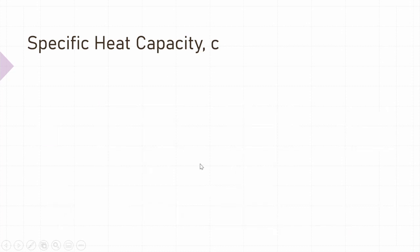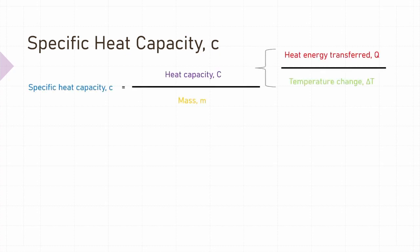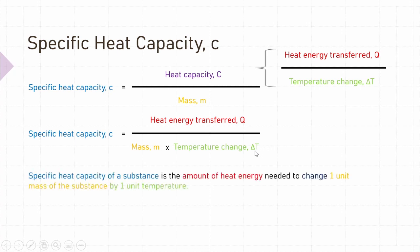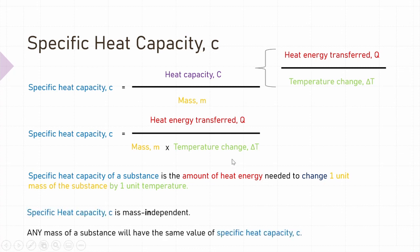We can do this by dividing the heat capacity of the substance by its mass. This gives us a new quantity known as specific heat capacity, denoted by lowercase c. Since we know that heat capacity is equal to Q over ΔT, we can substitute Q over ΔT into the formula for specific heat capacity. In word, the specific heat capacity of a substance is the amount of heat energy needed to change the temperature of one unit mass of a substance by one unit temperature. As specific heat capacity is expressed per unit mass, any mass of a specific material will have the same specific heat capacity.